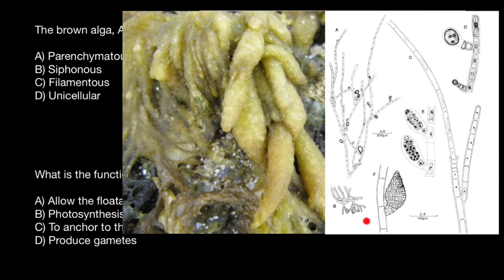B shows the base of the thallus with branched multicellular rhizoids. C shows branches — on the right with an apical cell, and on the left with a phaeophycean hair. D specifies cells of the unilocular sporangia, E of the young plurilocular sporangia, and F the plurilocular sporangium in its adult form. All these hair-like structures we call filaments — so this is a filamentous plant.